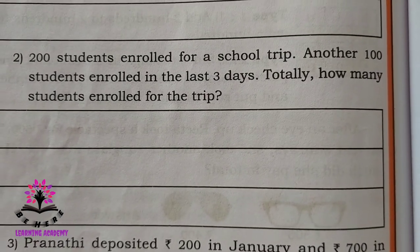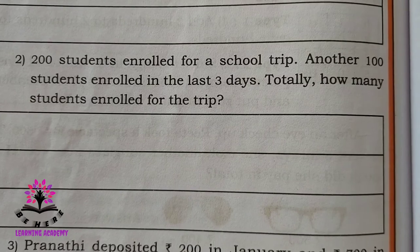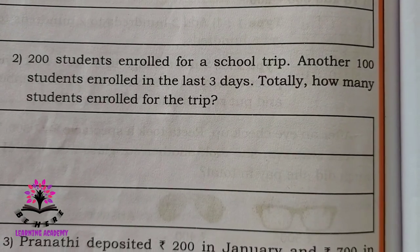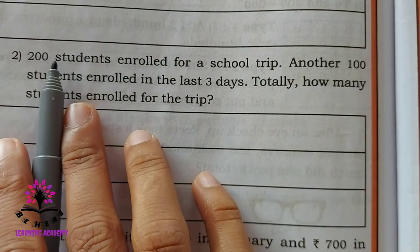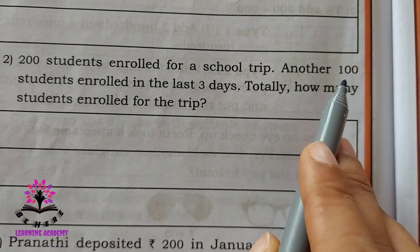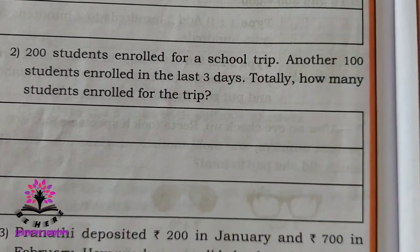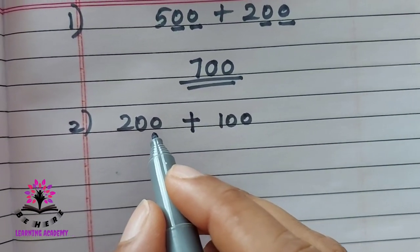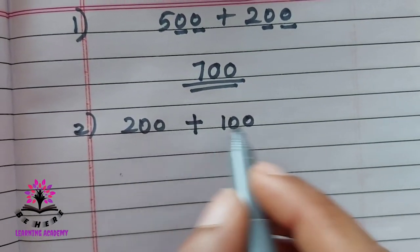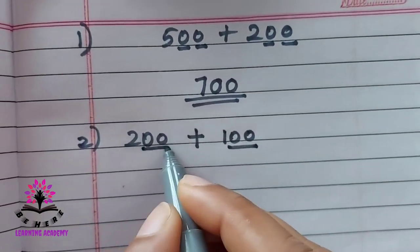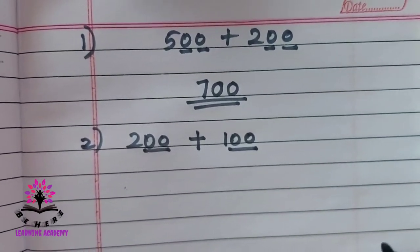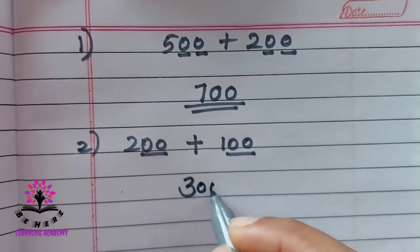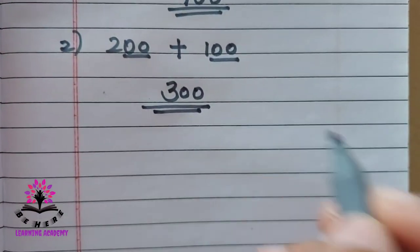200 students enrolled for a school trip; another 100 students enrolled in the last three days. How many students enrolled totally? Both have 0 in the unit and tens place, so add the hundreds digits: 2 plus 1 is 3, with two zeros — the answer is 300 students.